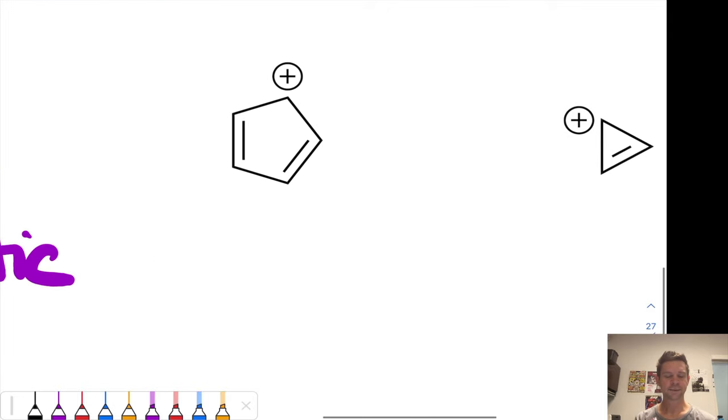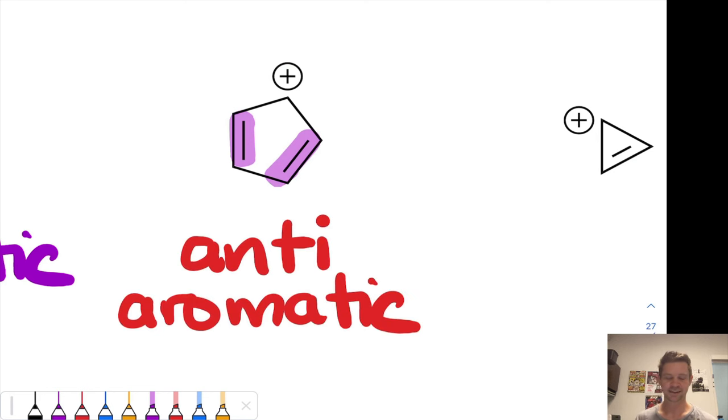Next up we have the cyclopentatrienal cation. It's cyclic, fully conjugated. This carbon has sp2 hybridization, and it has how many pi electrons? Two each from the pi bonds for a total of 4, and none contributed at the cationic carbon, so we've got 4 pi electrons total in this molecule. Is 4 a Huckel number? No. It's 4n where n is equal to 1. This molecule is anti-aromatic due purely to its pi electron count.